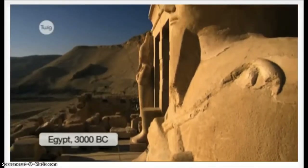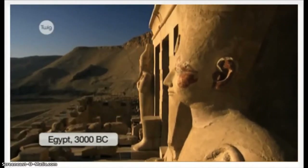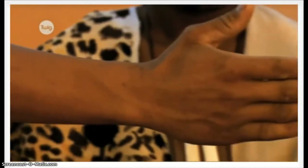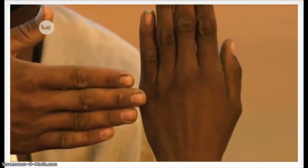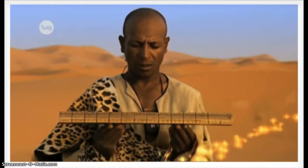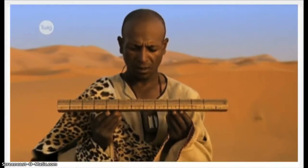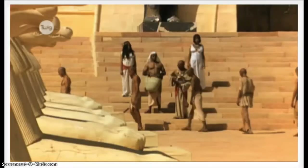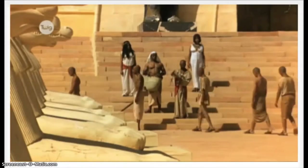In ancient Egypt, the base unit of length was a cubit — a measurement that varied depending on the length of a person's forearms, hands, and palms. To avoid these variations in length, the Egyptians created a standard royal cubit. Copies of this cubit were produced in granite and distributed to standardize measurement. This system allowed construction to flourish in the region.